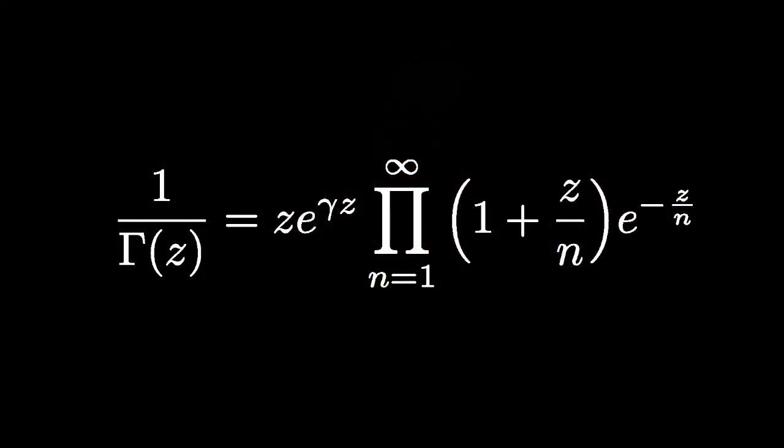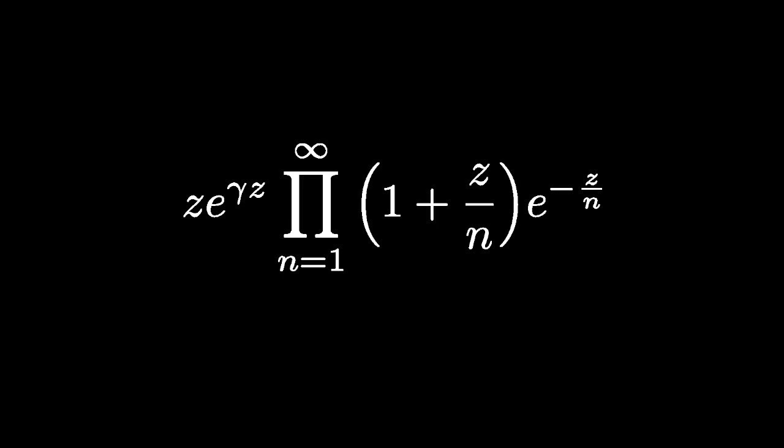Consider the following infinite product: Z times e to the gamma Z times the product from n equals 1 to infinity of 1 plus Z over n times e to the minus Z over n.